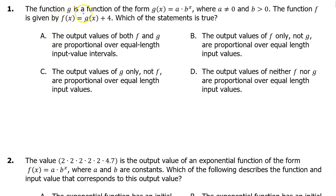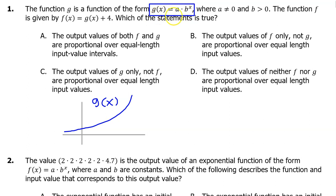Number 1. The function g is of the form g(x) = a·b^x, where a is not zero and b is greater than zero. The function f is given by f(x) = g(x) + 4. When they defined function g, they gave us the model for an exponential function. So we know g(x) is exponential — we don't know if it's exponential growth, decay, or a reflection, but we know it's exponential.